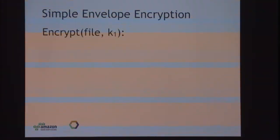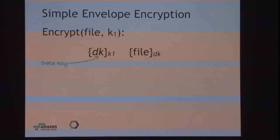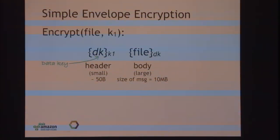The obvious way is something called simple envelope encryption. If I want to encrypt a file under a key, I first generate a new key called a data key, encrypt that data key under the master key, then use the data key to encrypt the file. The first part — the header — is an encryption of just the data key, so it's very small: a symmetric key is 16 or 32 bytes, plus a few bytes for IV and tag, so about 50 bytes total. The second part — the body — will be essentially the same size as the file. So a 10-megabyte file gives a 10-megabyte body and very compact headers. Both header and body use authenticated encryption, which gives confidentiality and integrity.